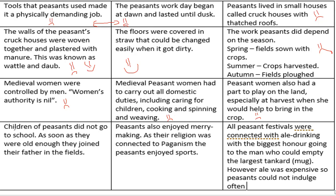Children of peasants did not go to school — as soon as they were old enough they joined their fathers in the field, leaving very little opportunity. Peasants also enjoyed merrymaking, which basically means they got drunk. As their religion was connected to paganism, peasants also enjoyed sport, showing they did have some aspect of freedom. All peasant festivals were connected with ale drinking, with the biggest honour going to the man who could empty the largest tankard. However, ale was expensive so peasants could not indulge often.